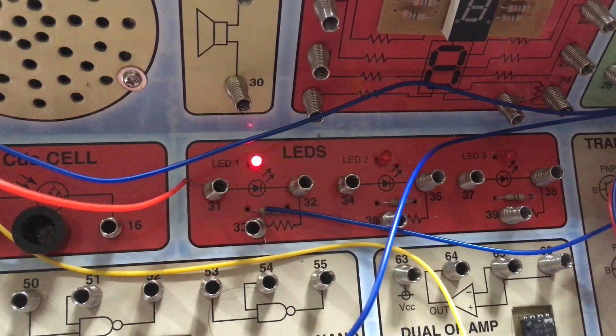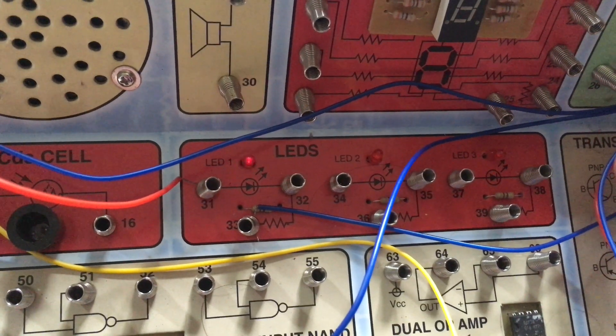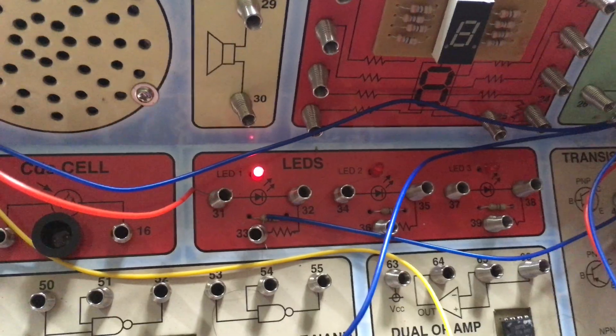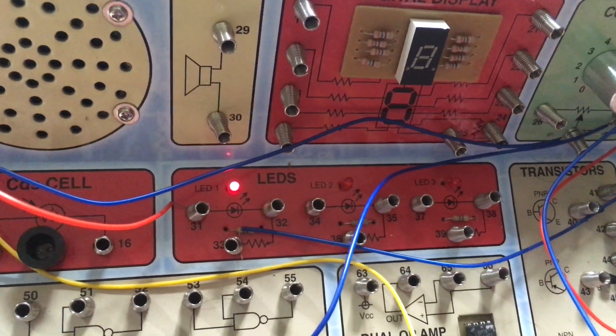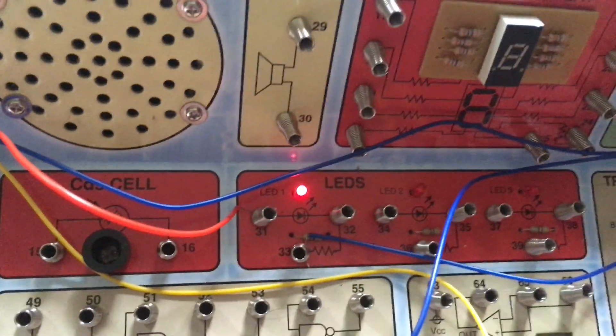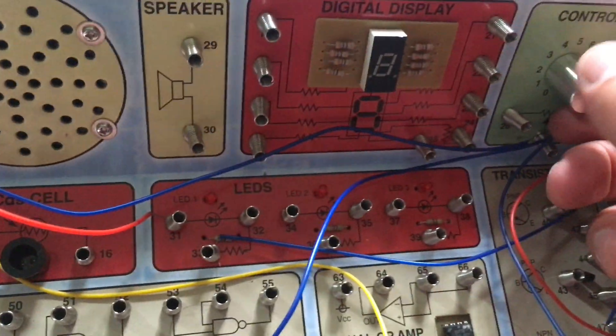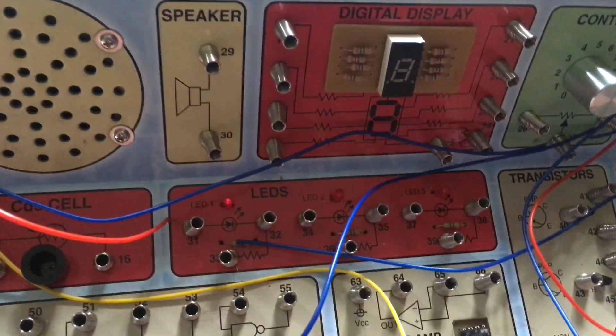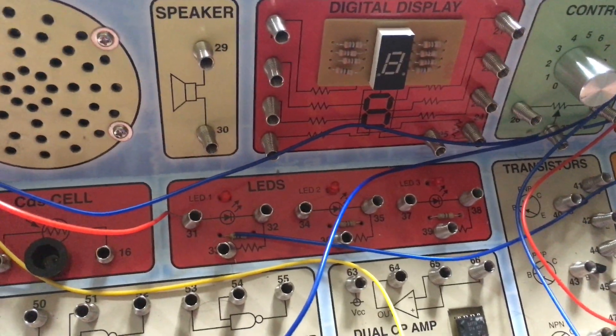I'm going to slowly increase the rate at which the LED flashes. And on the highest setting, the LED is flashing so fast that it appears to be on continuously. Now I'm going to move the control knob back near one. And you can see how slow it's blinking now.